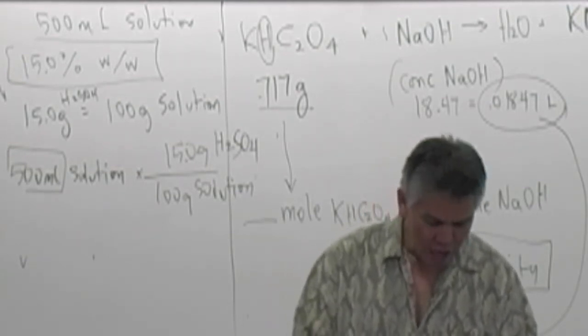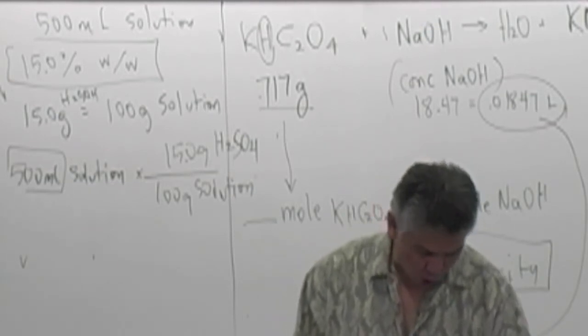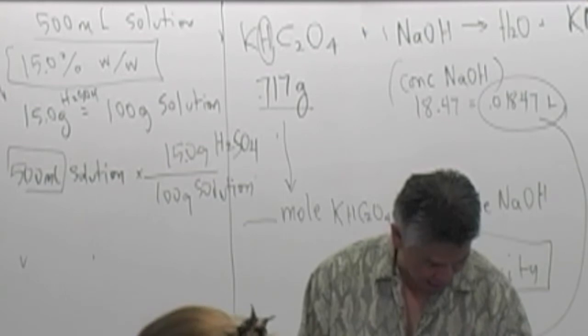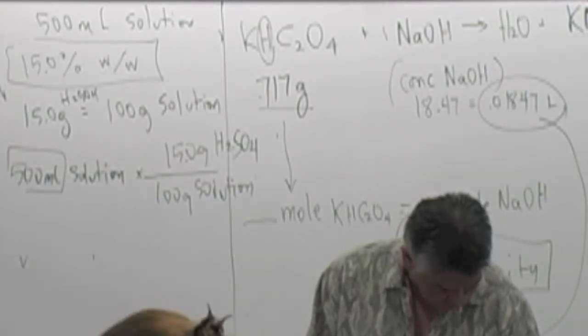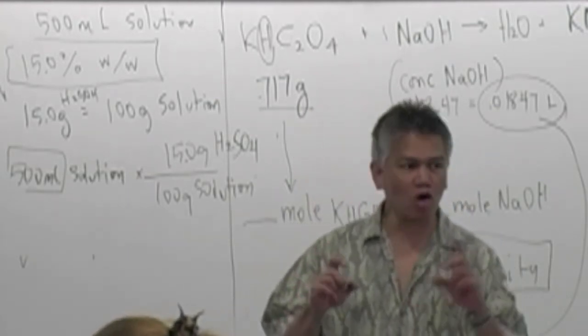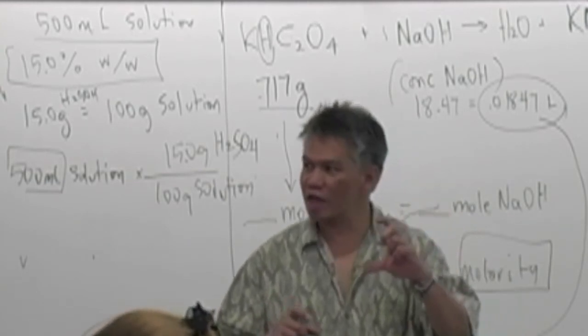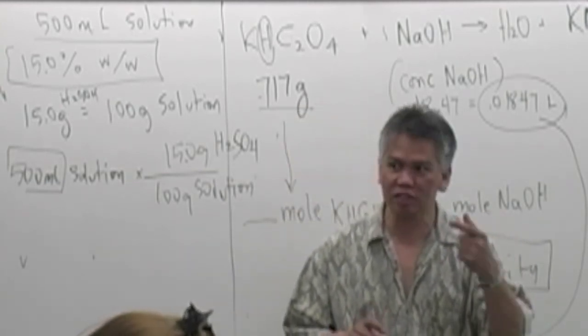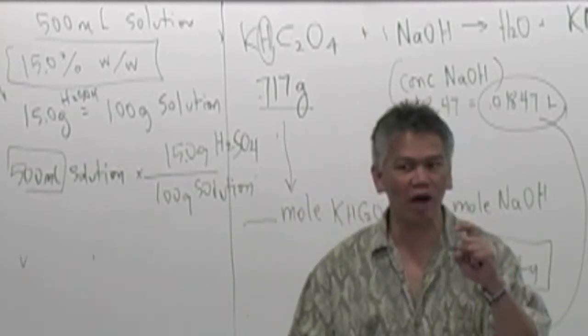The next thing you want to do is you want to measure a volume of water. I forget how much they have to measure out. I think they have to measure out about 100 milliliters. So what you want to do is take your graduated cylinder. Make sure that your graduated cylinder is dry. Because if there's any water in there, then it's going to ruin the concentration. Make sure it's dry.